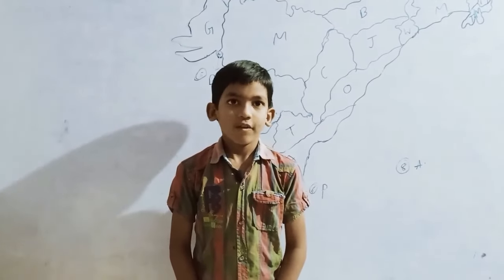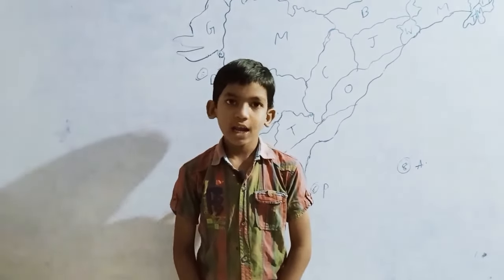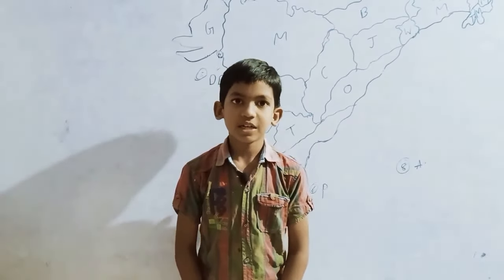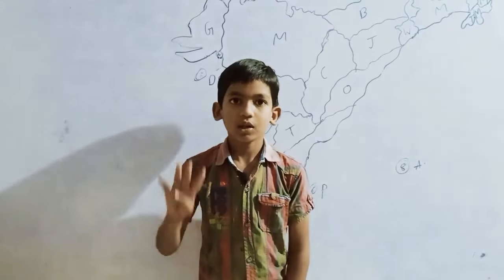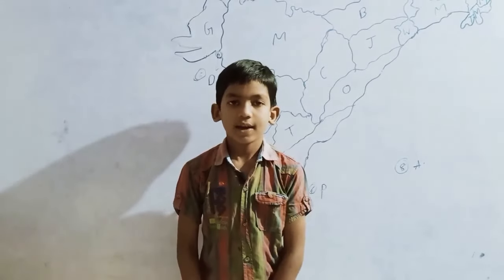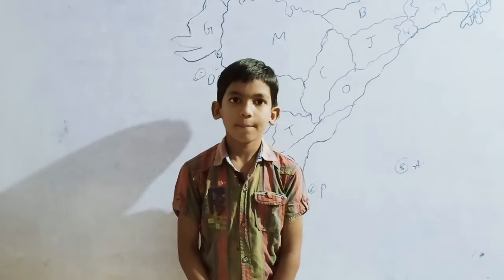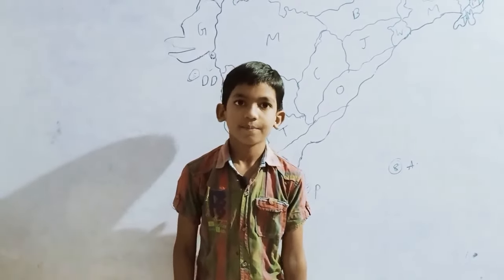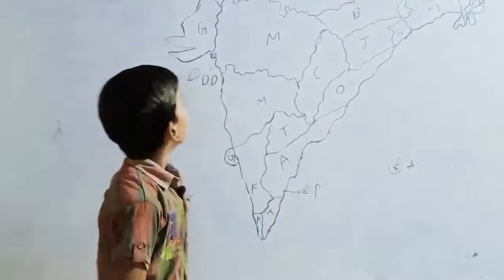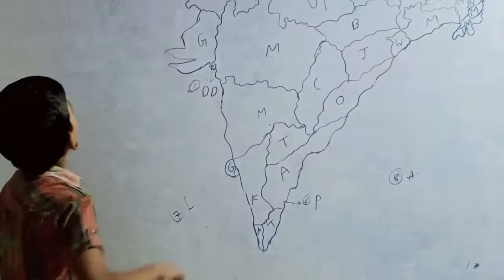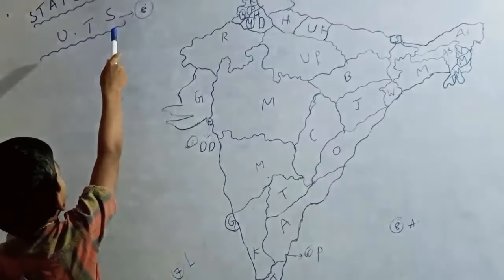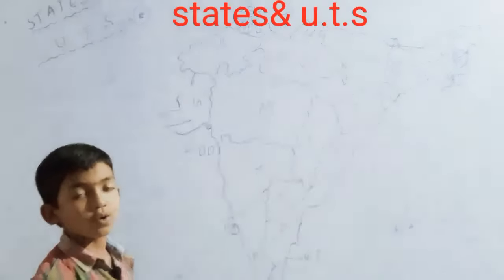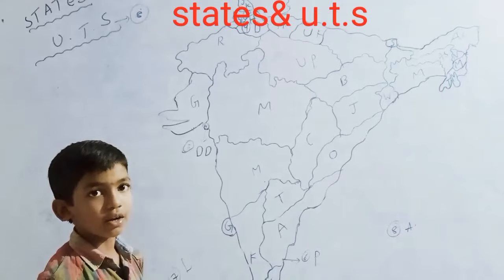Hi everyone, my name is Yorendra. I am studying 4th class in Narayana Olympiad School at Vijay Nagaram. Today our topic is 28 States and 8 Union Territories.